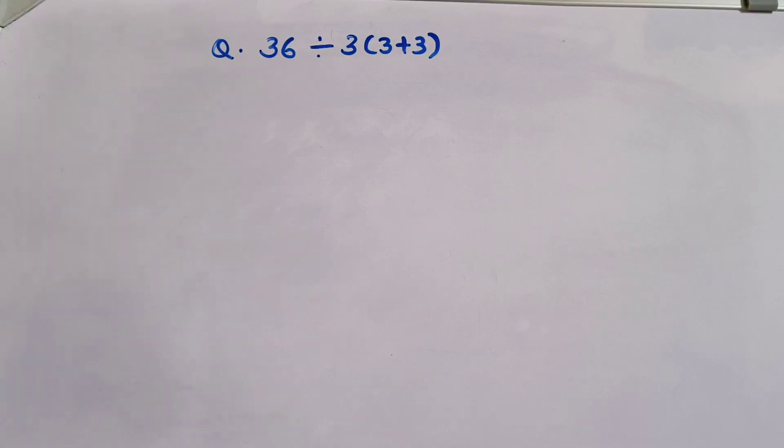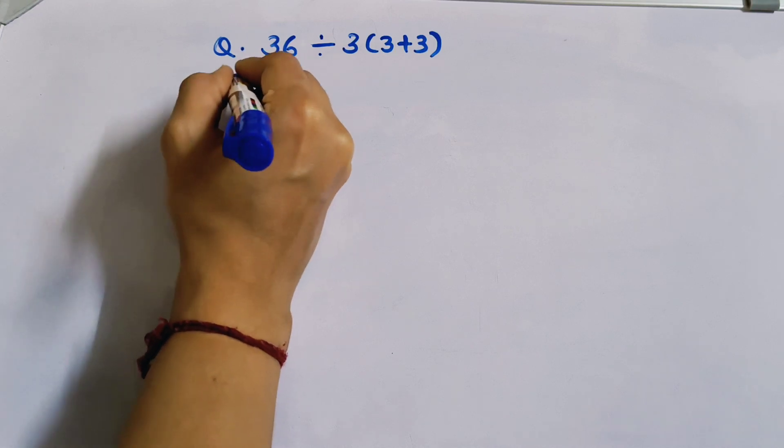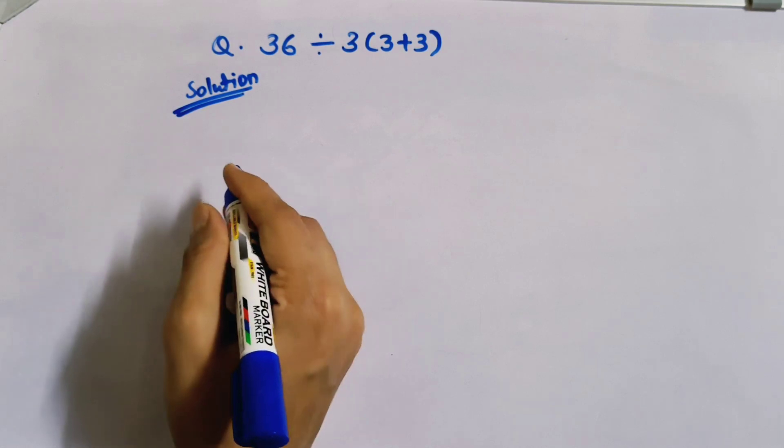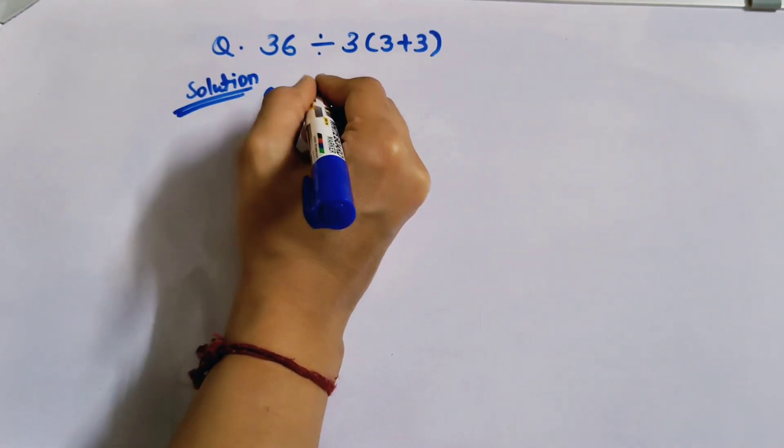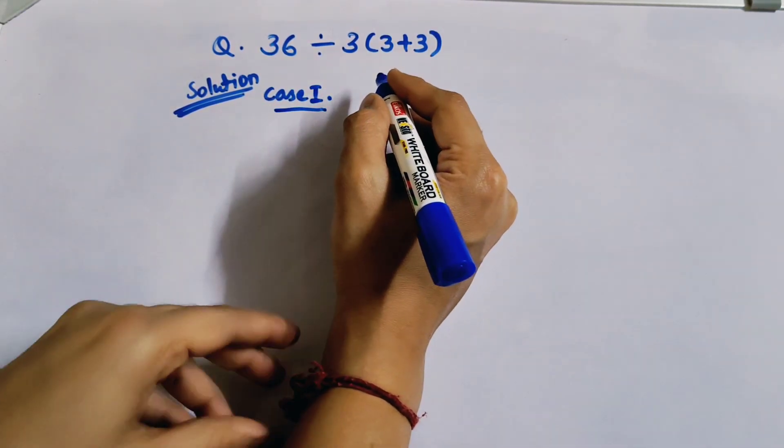Hello everyone, let's solve this simplification question: 36 divided by 3 bracket 3 plus 3. How will we solve this simplification question? First we take case 1. In case 1, how will we solve? We will apply the BODMAS rule.